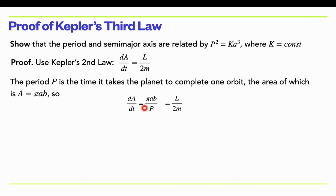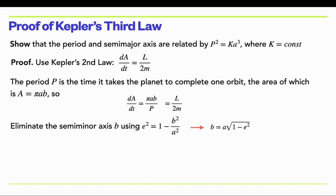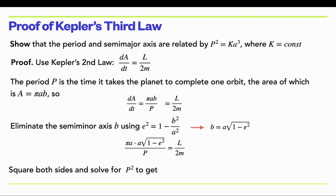We want to eliminate the semi-minor axis B using B = A√(1 − e²). Substituting, the numerator becomes πA² √(1 − e²). Squaring both sides and solving for P gives P² equal to that expression. We then substitute in our result from Kepler's first law for L² in terms of the masses and orbital parameters.